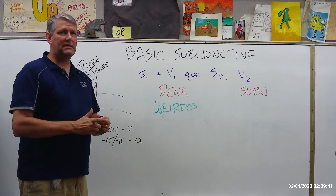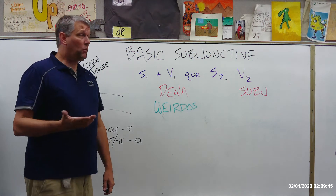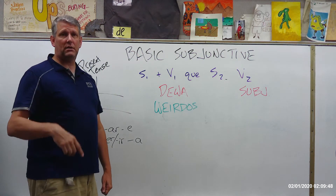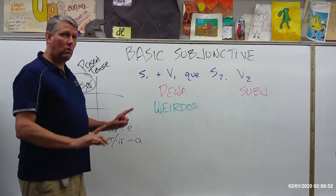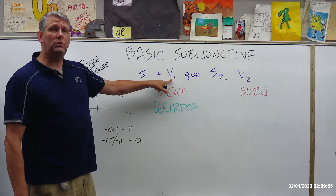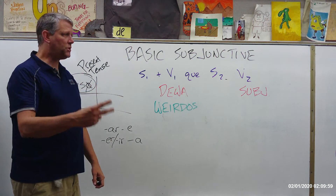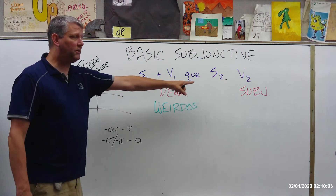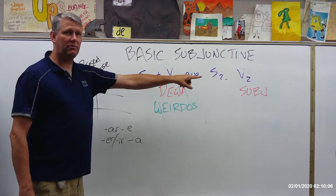In order to use the subjunctive, you'll notice I have S1 and S2 — you have to have two different subjects. So if I said something like 'I want to eat chocolate,' that would not require the subjunctive because I only have one subject in my sentence: I. So you have to have two different subjects, and then you're going to have two different verbs — V1 and V2.